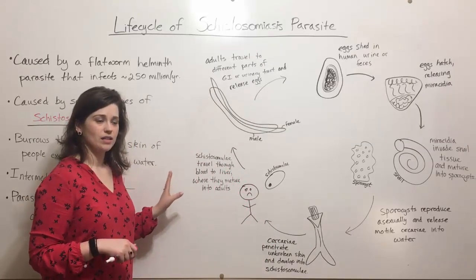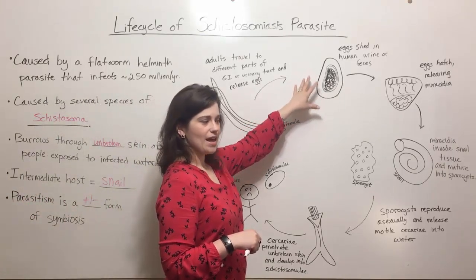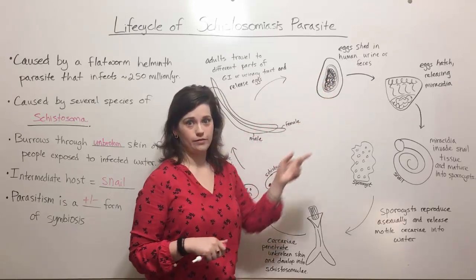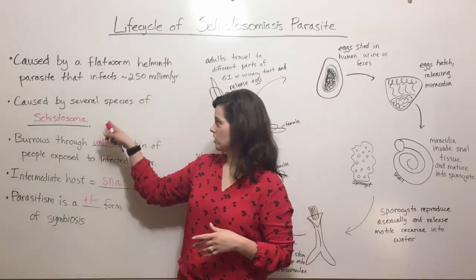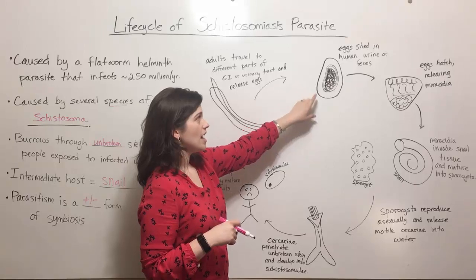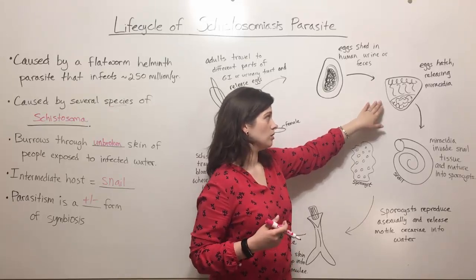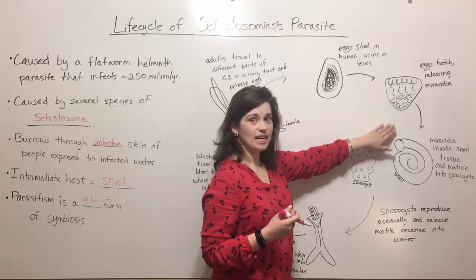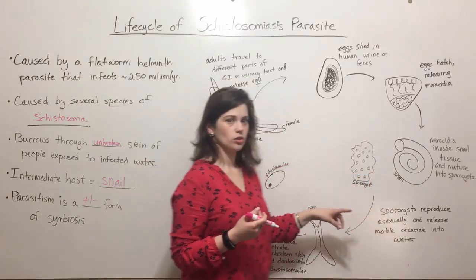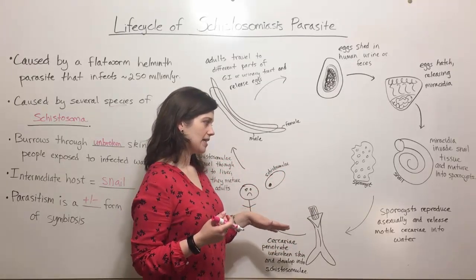Now let's talk about the life cycle of the schistosoma worm. Eggs are introduced into infected water through either human urine or feces, depending on which species of schistosoma you're talking about. The eggs then hatch and release a developmental stage called miracidia. The miracidia invade the snail's tissue, where they mature into a form called a sporocyst. The sporocysts then reproduce asexually.